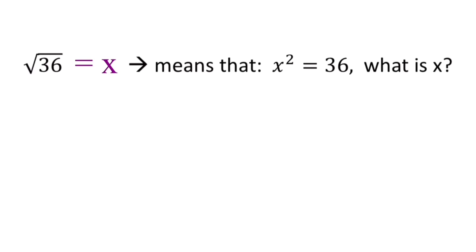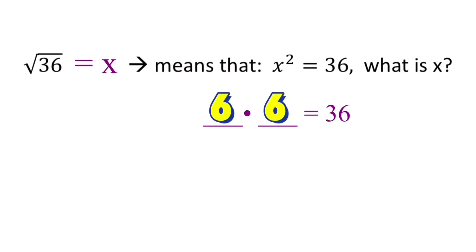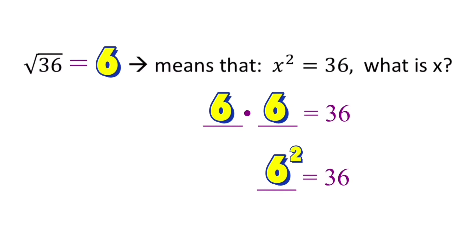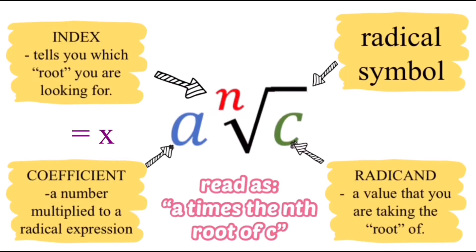We need to determine a value of x such that when we multiply x by itself twice, it gives us 36. So blank times blank equals 36, and it should be the same number — that would be six times six, since six times six is 36. So six squared equals 36, meaning x equals 6. Therefore the square root of 36 equals six. That's how we evaluate a radical expression.